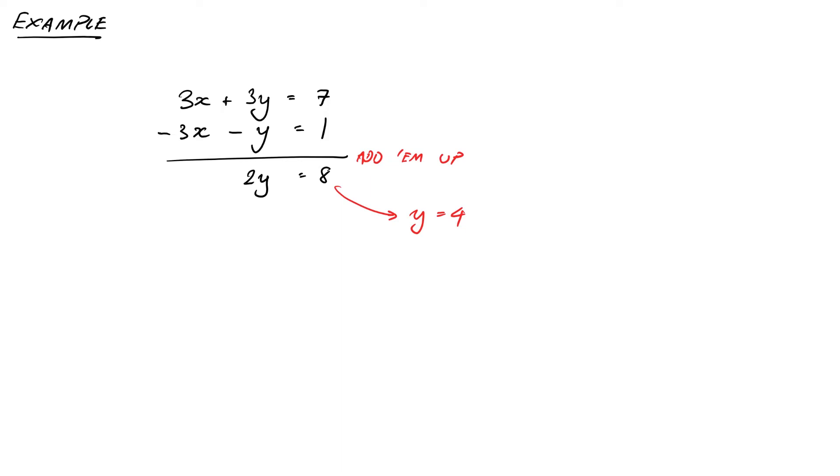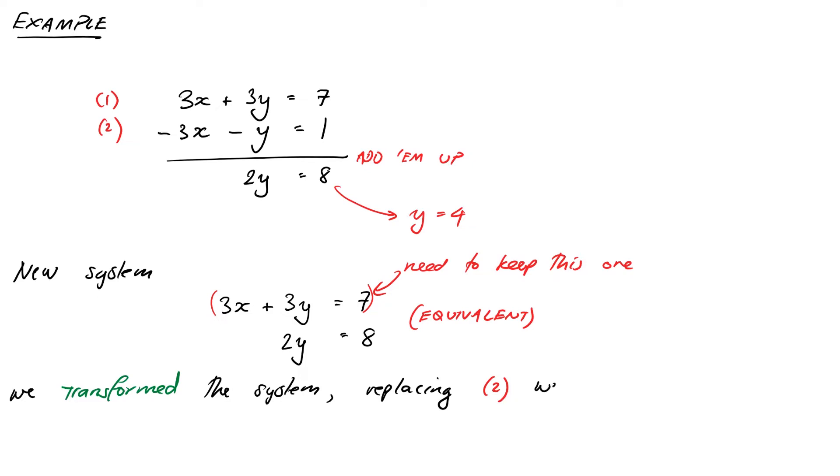Our aim is to transform our system of equations into that form and then do back substitution. If we write down a new full system that captured what we just did, it would look like 3x + 3y = 7 and 2y = 8. Notice we've kept the first equation because otherwise we wouldn't be able to get both x and y. A high-level way of thinking about what we just did is that we did a transformation of our system. We replaced equation 2 with the sum of equation 1 plus equation 2.